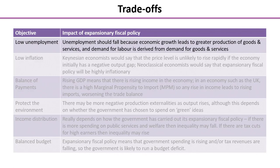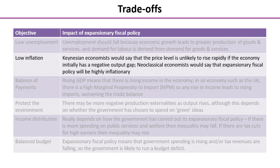Looking at the objective of low unemployment, unemployment should fall. This is because economic growth leads to greater production of goods and services, and demand for labor is derived from the demand for those goods and services. So employment will rise, and assuming that the size of the labor force doesn't change, unemployment should fall.